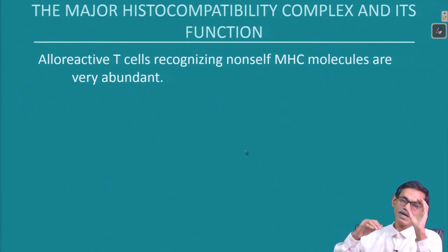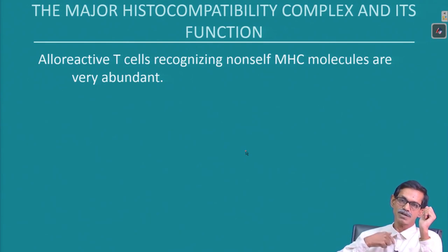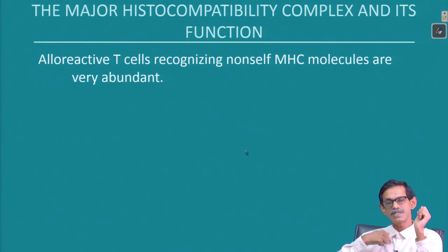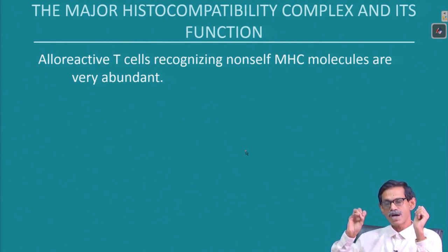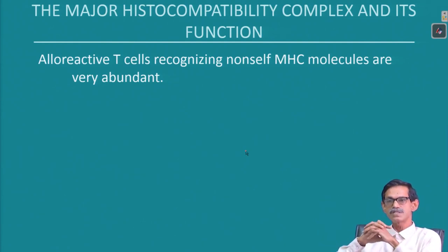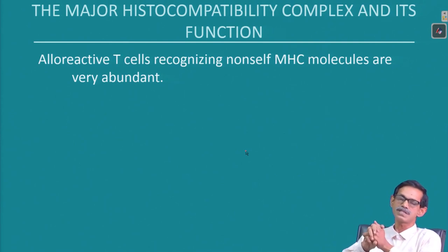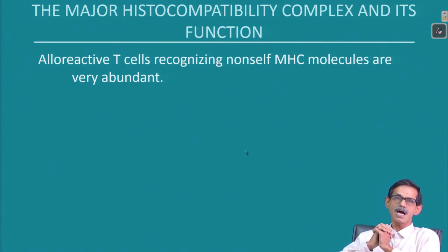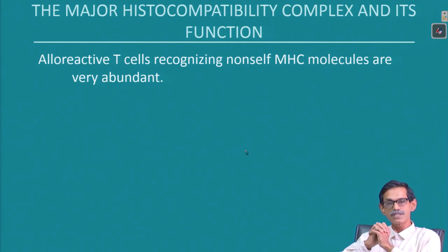Whatever antigen is presented by my MHC, only then can the T cell receptor recognize it. My T cell receptor will not recognize the antigen presented by somebody else's MHC, unless it is very similar. This kind of training is very important when T cells develop. But even after that, it was found that there are some alloreactive T cells which recognize non-self MHC.